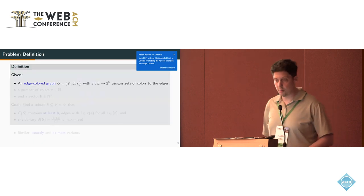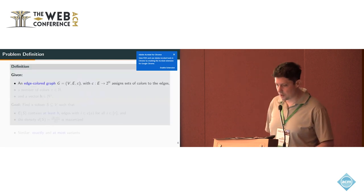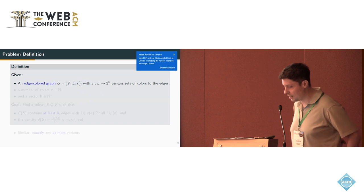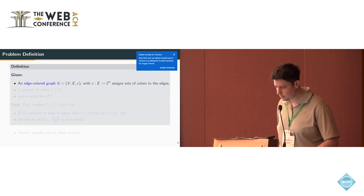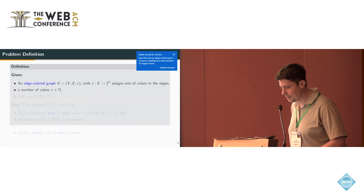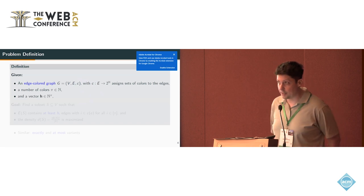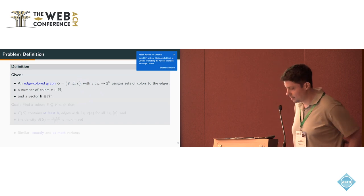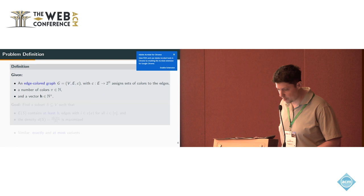Formally, we define our problem as follows. We are given an edge-colored graph - an undirected graph where we have additionally this function C that assigns to each edge a set of colors. Then we have the maximum number of colors in our graph π, and the vector h of length π giving us a constraint for each color.